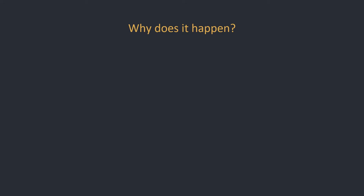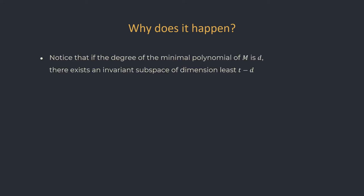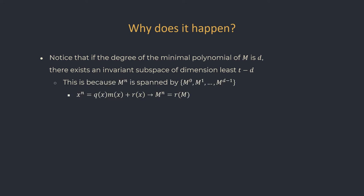The way we prove the three theorems is by studying the minimal polynomial of the matrix. Proving an upper bound of d on the degree of the minimal polynomial of M immediately translates to a lower bound of T minus d on the dimension of the invariant subspace. The reason is that higher powers of M are all spanned by M^0 through M^(d-1). We can see this using division with remainder of x^n by the minimal polynomial m(x), and then evaluating both sides on the matrix M.